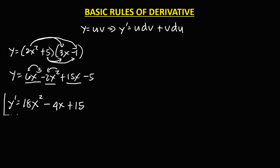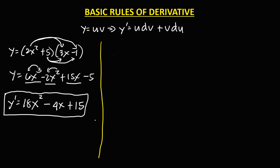Then to find this derivative using the product rule: from the given y equals 2x squared plus 5 times 3x minus 1, this is u and this is v.